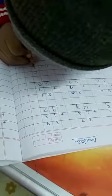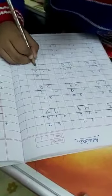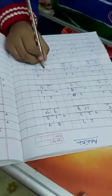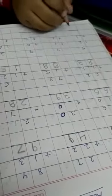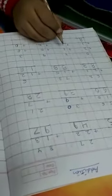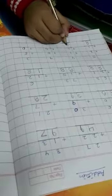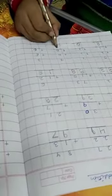6 plus 2 is 8. 0 plus 1 is 1. 8. 5 plus 2 is 7, plus 1. 8. 4 plus 1 is 5, plus 1 is 6. 9 plus 0 is 9. Very good.